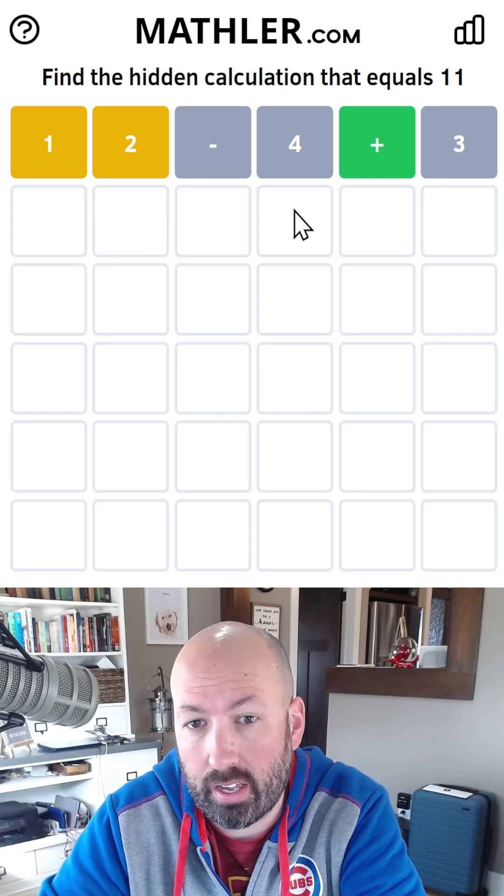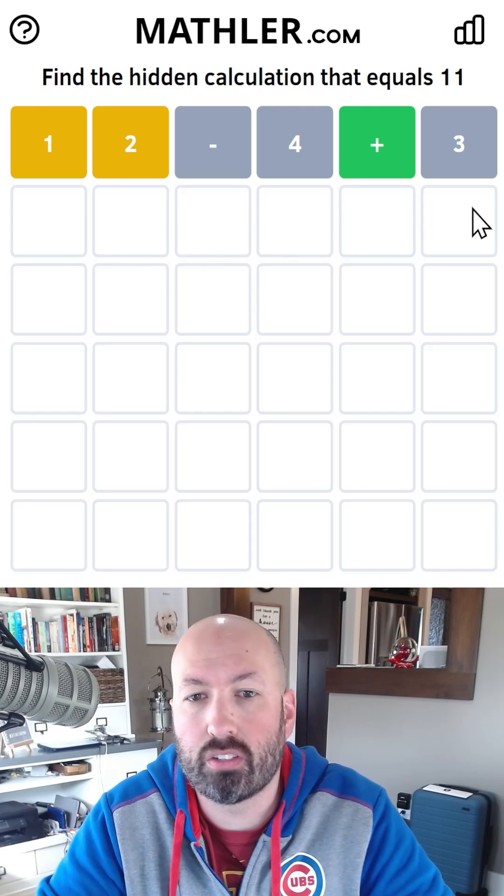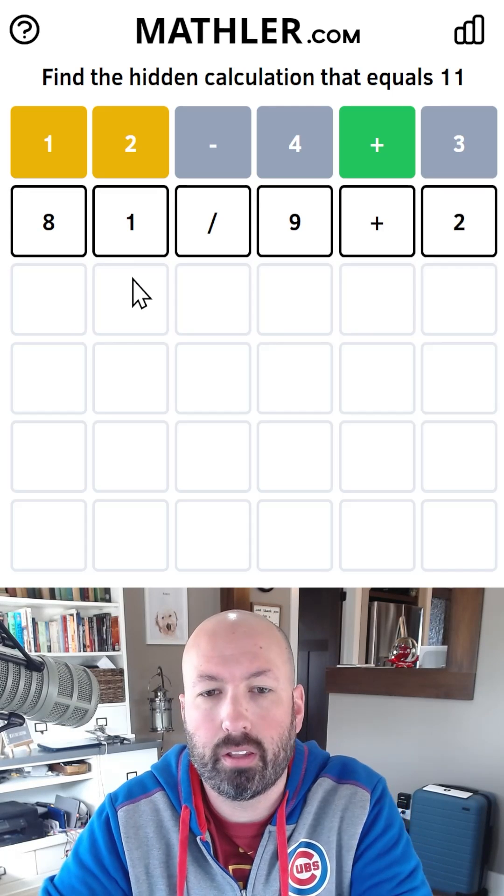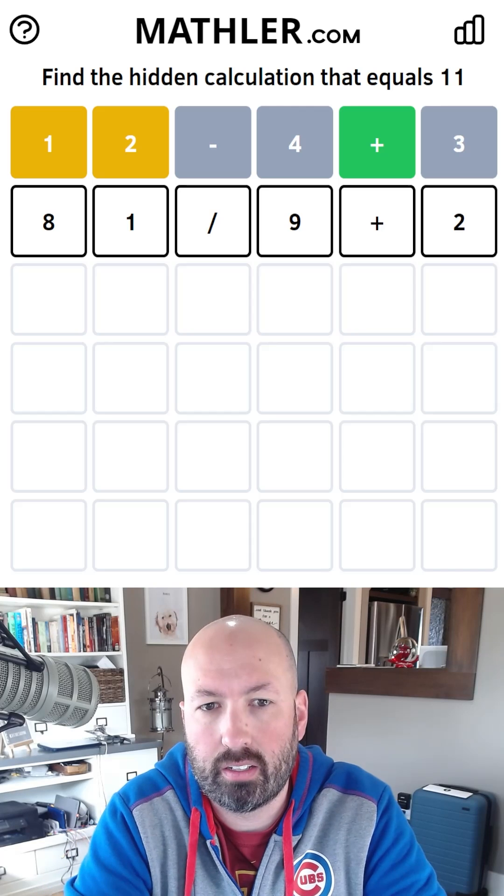81, we could divide by 9 and then add 2. Ooh, that's actually not too bad, because that gives us the 2 over here. I might do that. 81 divided by 9 plus 2. That lets us check some more digits, the 8 and the 9. Let's try that.